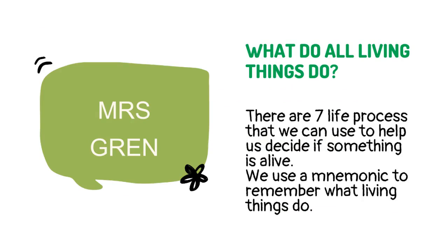There are 7 life processes that we can use to help us decide if something is alive. We use a mnemonic to remember what living things do: Mrs Gren.